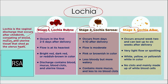Lochia rubra occurs in the first 2 to 5 days after delivery with heavy flow; it is bright red, sometimes dark red or reddish brown, and contains predominantly blood, mucus, blood clots, and uterine tissue. Lochia serosa occurs from day 4 to 10 after delivery with moderate flow; it is pink or brown in color, more watery, with less blood and more mucus, and less to no blood clots.